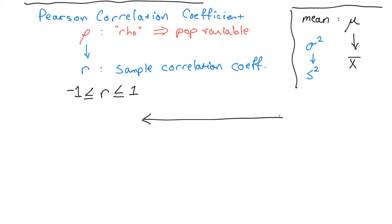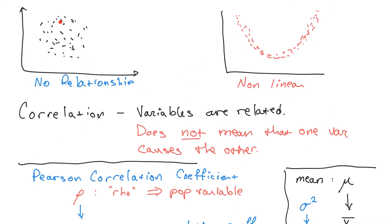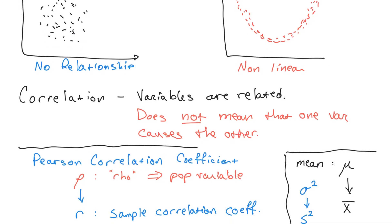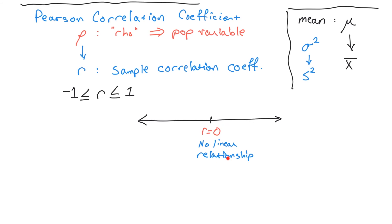When r equals 0, that means there is no linear relationship. That would be a data set that looks totally random — like noise. There's no line anywhere. If you have a correlation coefficient of 0, the variables are not correlated. There's no relationship between them, because if you march along the independent variable, the dependent variable behaves in a totally random, non-linear fashion.